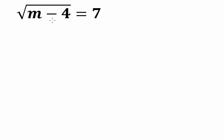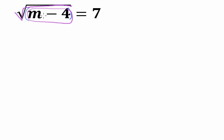Let's keep going. The square root of the quantity (m minus 4) is equal to 7. A little more complicated — inside the square root sign I have an expression, a binomial, instead of just a variable. But we're going to solve it the same way. Before we solve it, this question is really asking: the square root of some number is equal to 7 — what is that number? We know the square root of 49 is equal to 7, so whatever is inside has to equal 49, meaning m equals 53.